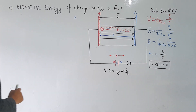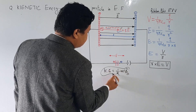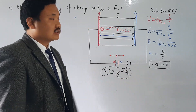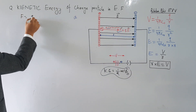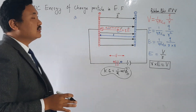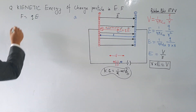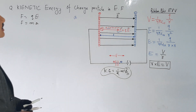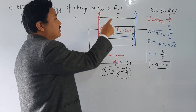Now I want to find the kinetic energy. The formula for kinetic energy is one-half M V squared. From the force equation, the force is equal to QE. If it were a negative charge, the direction of force would be opposite to the electric field. Another formula we know is: force is equal to mass times acceleration, where A is the acceleration of the charged particle in the electric field and M is its mass.